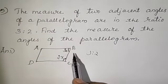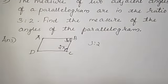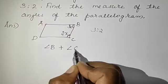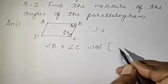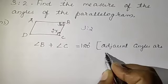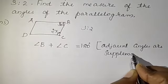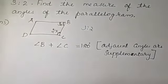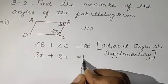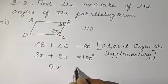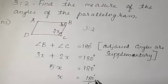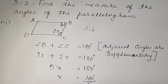We know in a parallelogram the adjacent angles are supplementary — the sum of adjacent angles is 180 degrees. So we can write angle B plus angle C is equal to 180 degrees, because adjacent angles are supplementary. Now, 3X plus 2X is equal to 180 degrees. So 5X equals 180 degrees, which gives X equal to 180 divided by 5, so X is equal to 36 degrees.